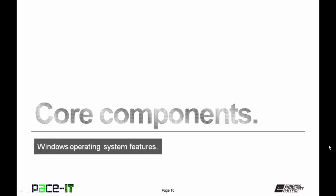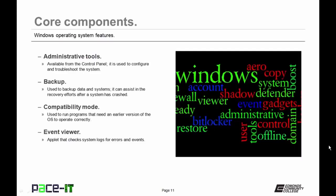Let's move on to some core components of Windows operating systems. We begin with administrative tools — all versions come with administrative tools located in the Control Panel that allow you to configure and troubleshoot your system. All Windows operating systems also have a backup program built right into the operating system.